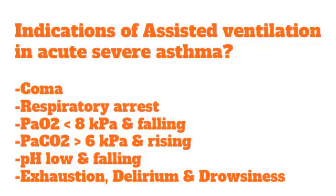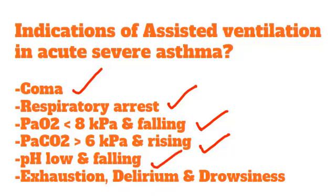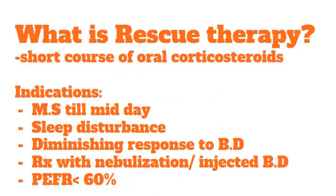The indications for assisted ventilation in acute severe asthma are: coma or respiratory arrest, partial pressure of oxygen falling below 8 kilopascals, partial pressure of carbon dioxide above 6 kilopascals and rising, low and falling pH, and the patient being exhausted with delirium or drowsiness. If these conditions are present, we must provide the patient with mechanical ventilatory support, otherwise the patient will collapse.